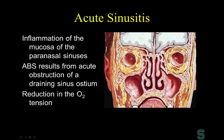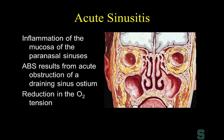Regarding sinusitis, the drainage pathway of the maxillary sinus passes through the osteomeatal unit, while the sphenoid sinus drains through the sphenoethmoidal recess. The pathogenesis of acute sinusitis begins with obstruction of the primary ostium of the maxillary sinus, causing a reduction in oxygen tension, leading to sinus inflammation and creating conditions for bacterial growth.